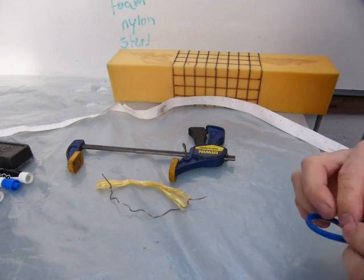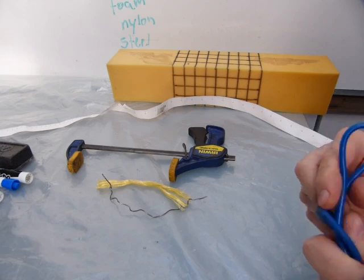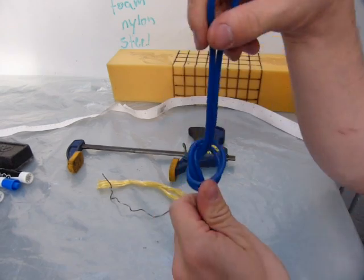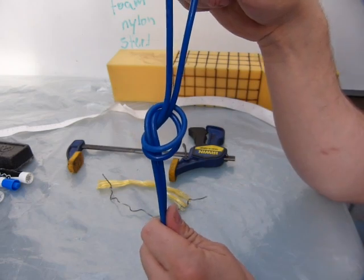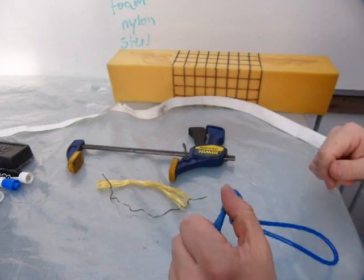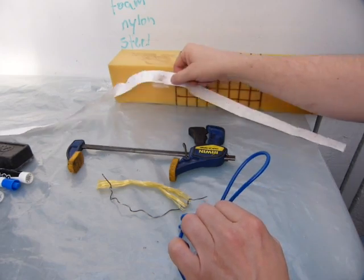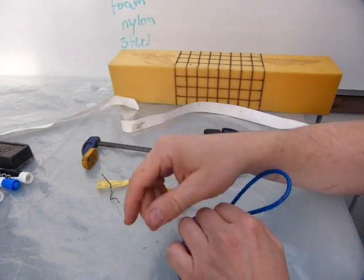Instructors in trade, material handling and safety tell us that if you tie a knot on a rope it weakens it by 50%. In this video I'll explain why and how using a chunk of foam, a tape measure and a wood clamp.